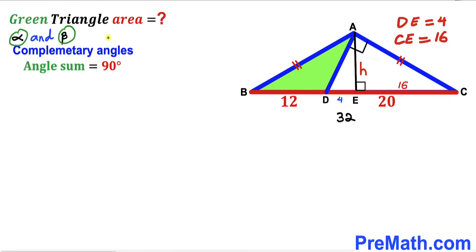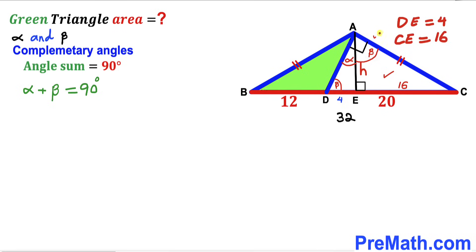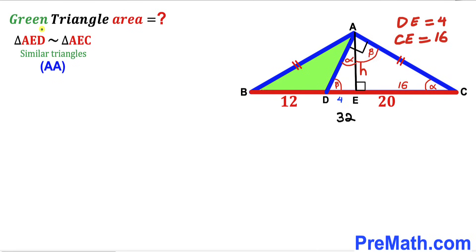Now let's assume that alpha and beta are two complementary angles — in other words, alpha plus beta equals 90 degrees. This angle is alpha; since we have a 90 degree angle here, this adjacent angle is beta. In triangle AEC, this angle is beta, this angle is 90 degrees, so this angle is alpha. Therefore we conclude that triangles AED and AEC are similar triangles by the angle-angle similarity theorem.